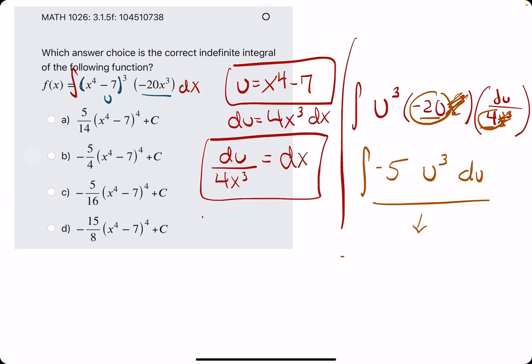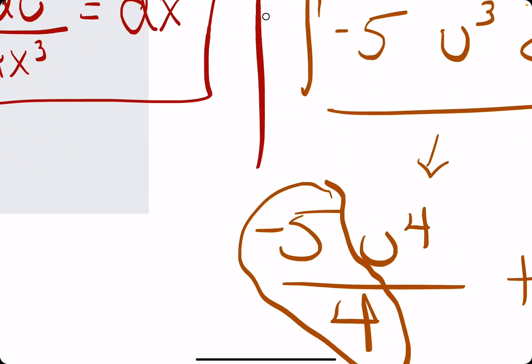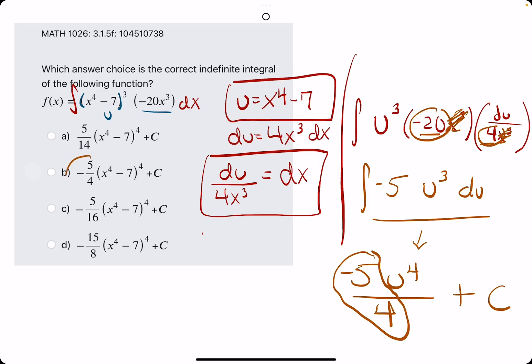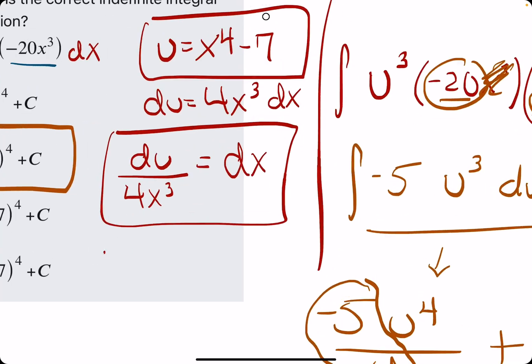Leave the u to the 3rd du. Now we find the antiderivative, leaving the negative 5, adding 1 to the exponent, dividing by that exponent, plus c. It's at this point we could plug the u back in, but we don't have to. We are looking for the constant, the coefficient out in front, negative 5 4ths. So we see that b is our answer. We can do this relatively quickly, following these steps.